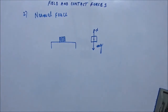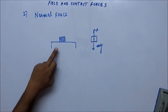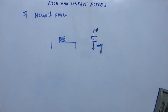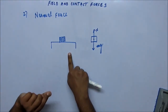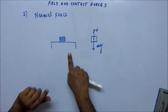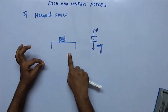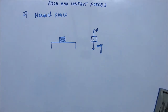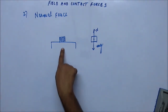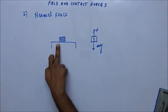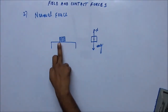This is a force due to molecular interactions. At the molecular level, the molecules of the block press the molecules of the table, and due to that molecular interaction there will be some repulsion. It's a kind of electromagnetic force. On a macro level, there will be some reaction by the table, and it will be vertically upward — perpendicular to the surface of contact.